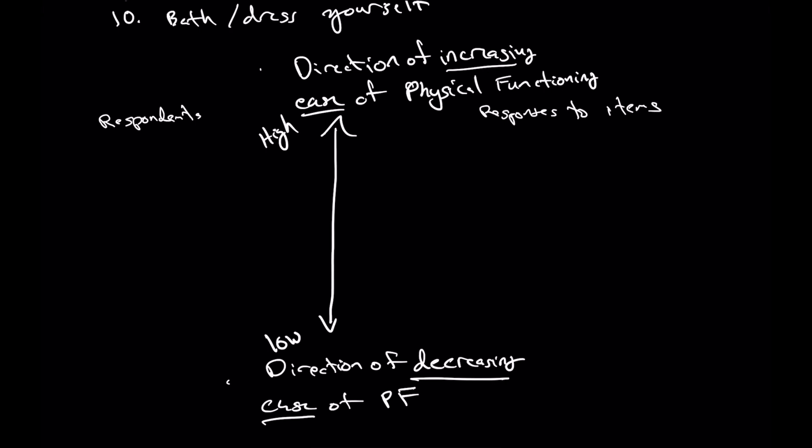What we can do to fill out this respondents side is we can say well those with really high physical functioning can run, do sports, lift heavy objects. These are some of the types of characteristics that those that are really high functioning can do.